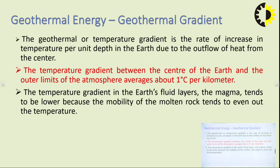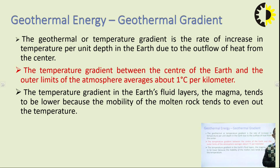The geothermal or temperature gradient is the rate of increase in temperature per unit depth in the earth, due to the outflow of heat from the center. The temperature gradient between the center of the earth and the outer limits of the atmosphere averages about 1 degree Celsius per kilometer. In the earth's fluid layer, the magma, the temperature gradient tends to be lower because the mobility of molten rock tends to even out the temperature.